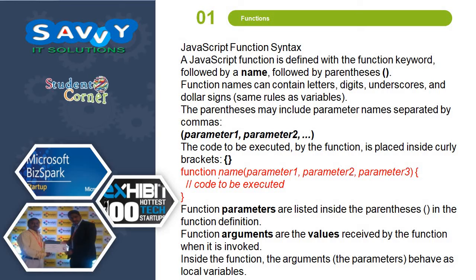JavaScript function syntax. A JavaScript function is defined with the function keyword followed by a name followed by parentheses. This is the point one. Second point, function names can contain letters, digits, underscores and dollar signs. Same rules as variables. The parentheses may include parameter names separated by commas.